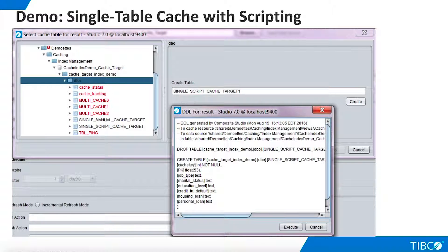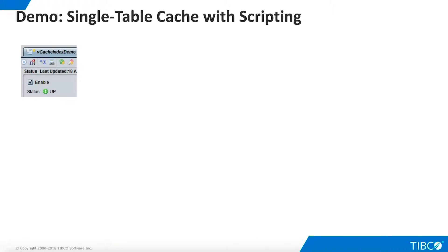Now let's look at our second use case: single table caching with index management scripts. To begin, create a single table cache. Just as before, we are using SQL Server as our cache target. Before we look at the scripting, let's get a baseline cache running. Load the cache and make sure it is up.